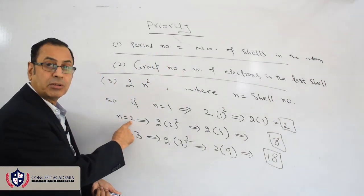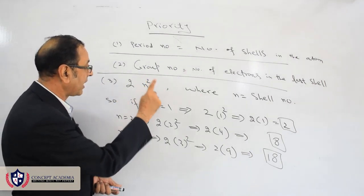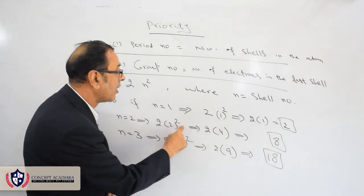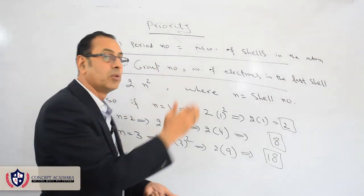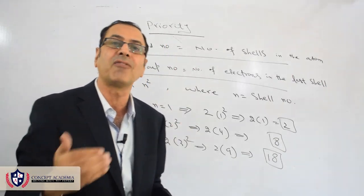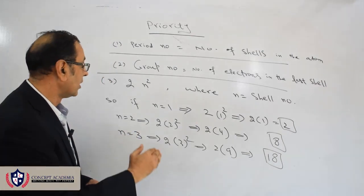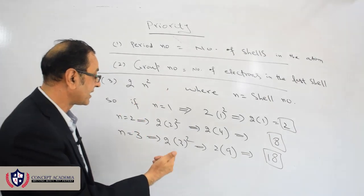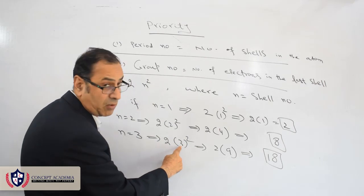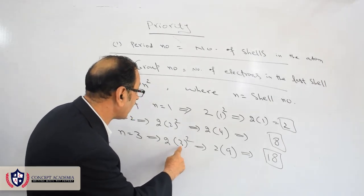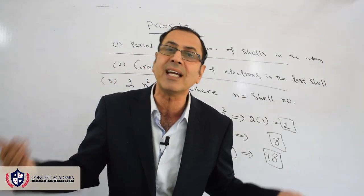For shell number three, n = 3, so the rule is 2n² = 2 × 3² = 2 × 9 = 18. So the third shell can maximum have 18 electrons.